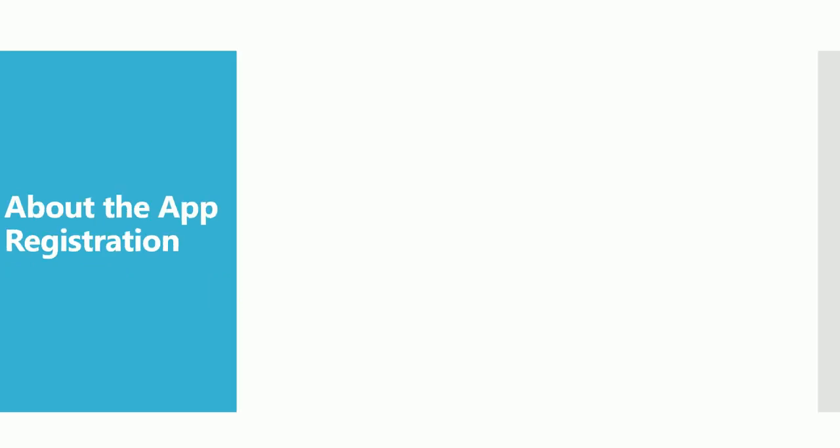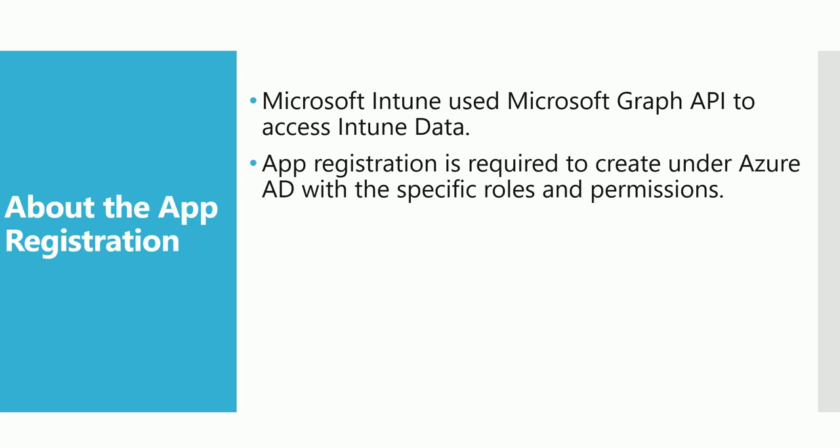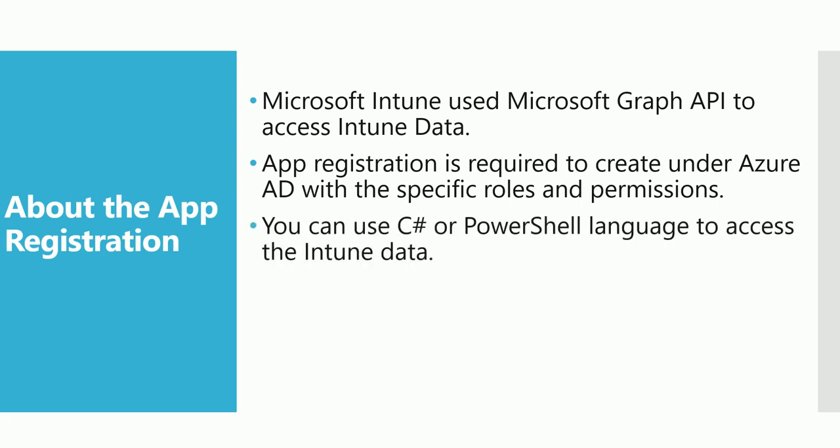Here is the first slide to understand what app registration is about. Microsoft Intune uses the Microsoft Graph API to access Intune data, so when we create any app registration for Intune, it will use the Microsoft Graph API. This app registration is required to be created under Azure AD with specific roles and permissions. You can use C# or PowerShell to access the Intune data.